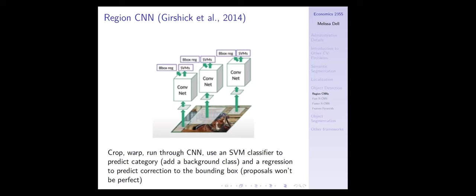This regression head predicts a delta on those coordinates to shift the boxes to improve the match with the ground truth. These methods are always highly supervised — you know what the ground truth is in training and you're trying to match predictions to the ground truth. Your loss for the regression is between the ground truth and the shifted coordinates from that original proposal from selective search.